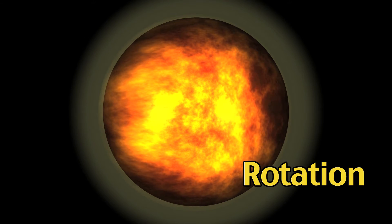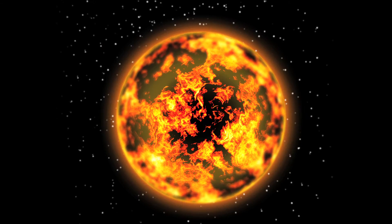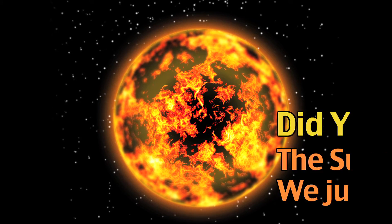Since the sun is not a solid mass, not all parts of the sun rotate at the same rate. The sun's rate of rotation changes based on the sun's latitude.